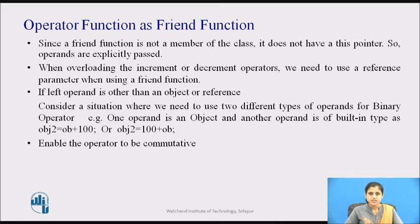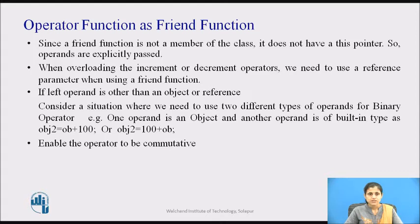Both arguments are explicitly passed to the friend operator function. As we know, object + integer has the same meaning as integer + object. Therefore, to allow both object + integer and integer + object, simply overload the function twice — one version for each situation. Thus, when you overload an operator using two friend functions, the object may appear on either the left or right side of the operator.